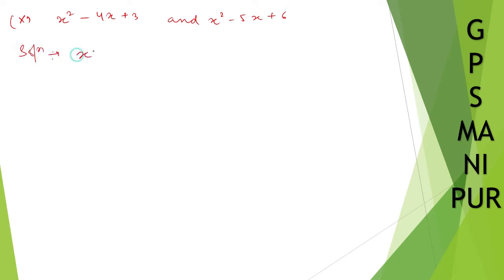This one, x square minus 4x plus 3. I can write down as x square minus, so it will be 3 plus 1, x plus 3. So x square minus 3x minus x plus 3. So from these two, take x common, so it will be x minus 3, minus 1 take common, so it will be x minus 3. So x minus 1 into x minus 3.